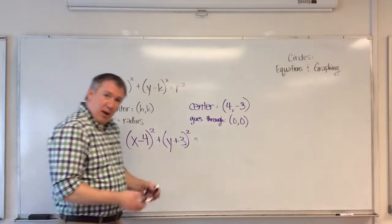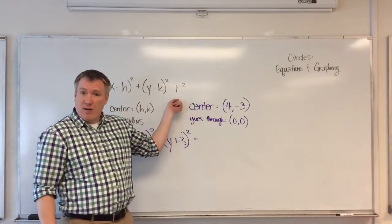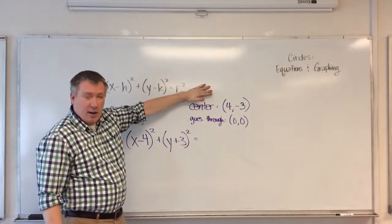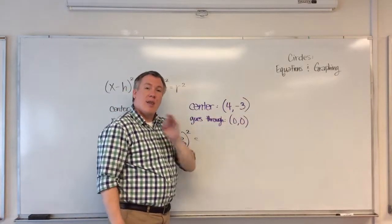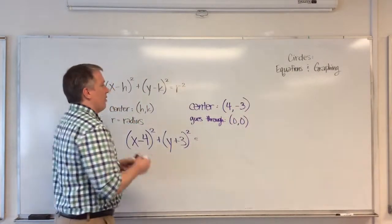Well, how do you find the radius? What is the radius? The radius is a distance from the center of a circle to any point on that circle. So if this is the center, and this is a point on the circle, if I can find the distance between them, that's the radius. How do you find the distance between two points?